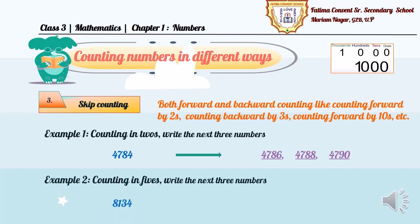Similarly, we have counting in 5s, that means, you need to skip counting by adding 5. So, 8134, the answer will be 8139, 8144, and 8149.